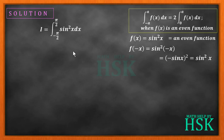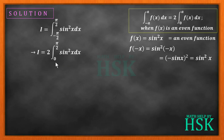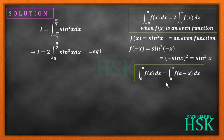Since f(x) is an even function, I can apply the property and write I as equal to twice the integral from 0 to pi by 2 of sin²x dx. The lower limit becomes 0 and the problem looks a bit lighter. We mark this as equation number one. The next property we apply is: the integral of f(x) dx from 0 to a equals the integral of f(a − x) dx from 0 to a.